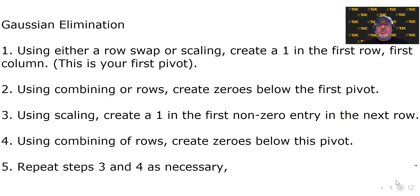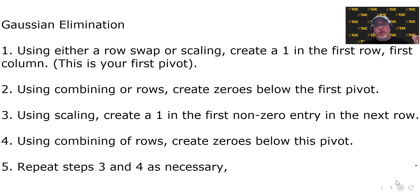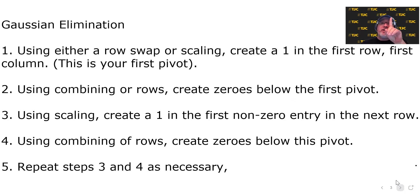Here's how you do Gaussian elimination — this is easier to do than it is to put into words. Step one: using either a row swap or a scaling, meaning that you multiply by any value that you want, create a one in the first row, first column. This will be your first pivot. Step two: using combining of rows, meaning multiplying one row by any number you want and adding it to another row, create zeros below the first pivot. Every time we create a one in a column, we use it to eliminate the numbers below it — that's why one is so valuable.